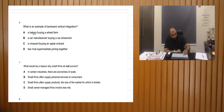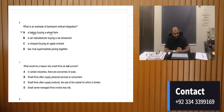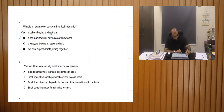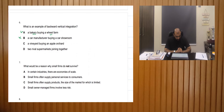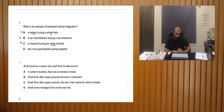An example of backward vertical integration: a bakery buying a wheat farm is correct because wheat is the bakery's raw material. A car manufacturer buying a showroom is vertical forward integration, so that is incorrect. A vineyard buying an apple orchard — this appears to be backward integration, but wine is produced from grapes, not apples, so it is incorrect. Two rival supermarkets merging is horizontal integration.